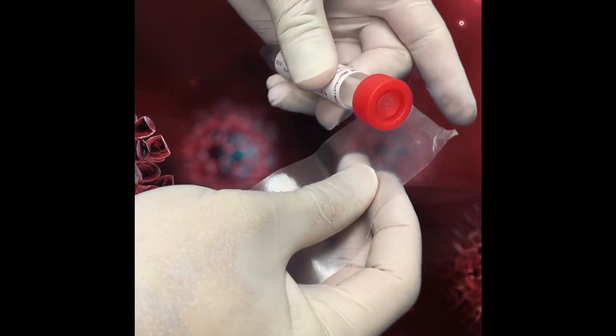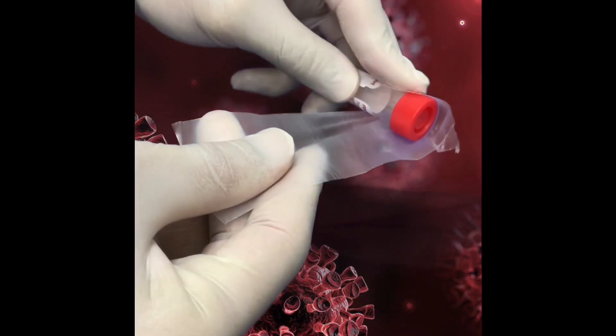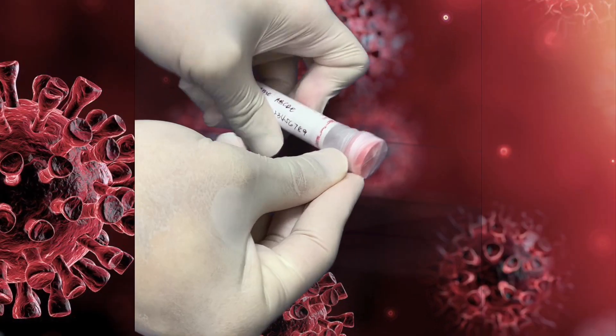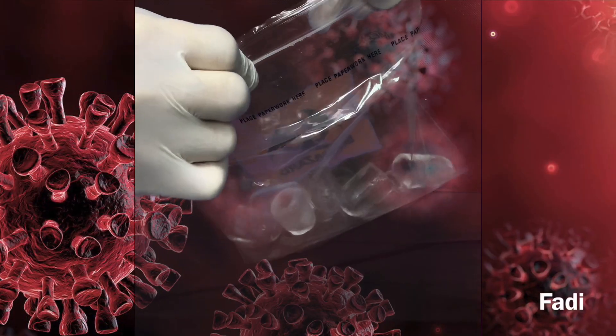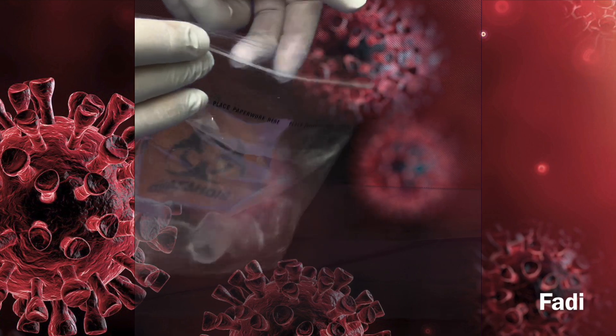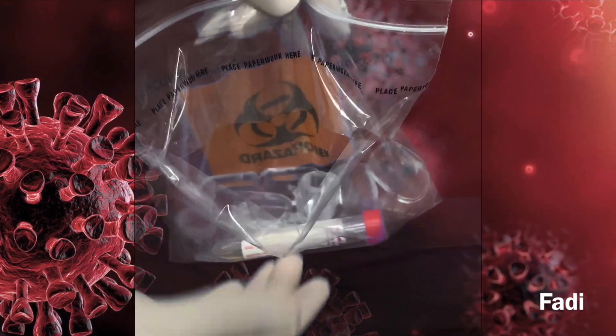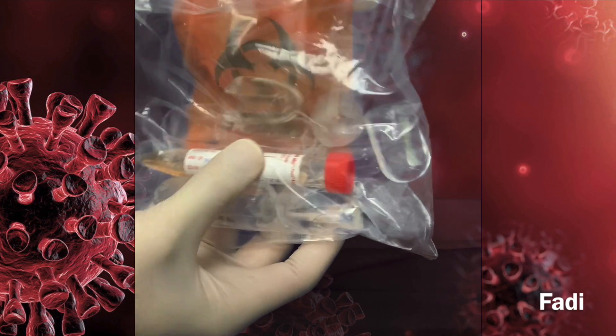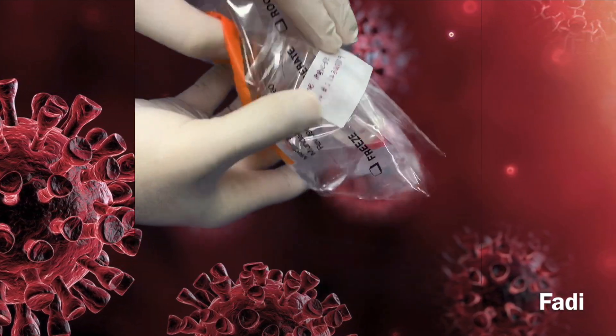The sample should be kept between two Celsius to eight Celsius. Here we are using ice chips. We are not putting the sample directly to the ice, it's in the second pocket. Make sure that we are labeling the sample and we will send it to the lab. Thank you so much.